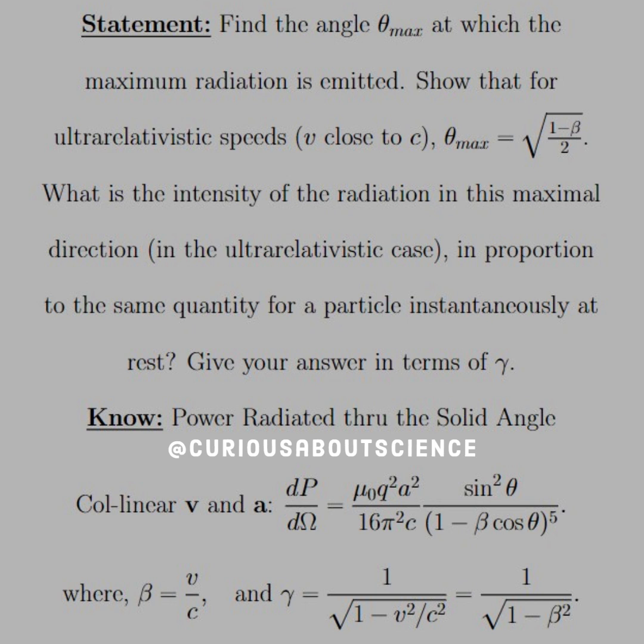Okay, we get dP over the solid angle, so we're going to have to integrate over something. That's what this is telling us. We get the Larmor-esque formula, where we have mu naught q squared a squared over 16 pi squared c times sine squared theta over 1 minus beta cosine theta to the fifth power.